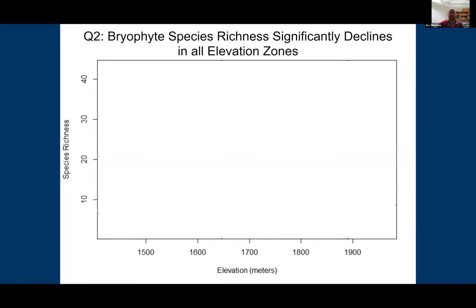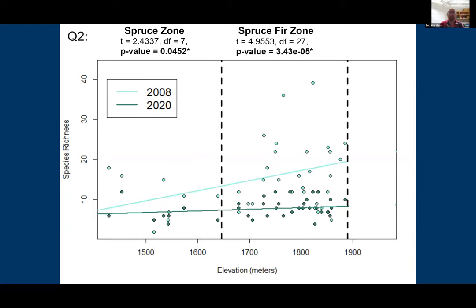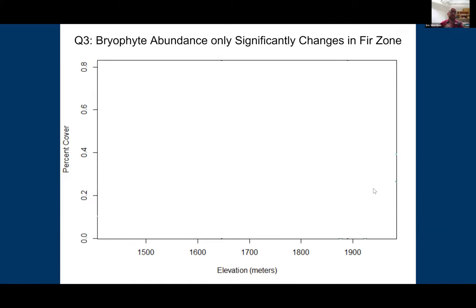With elevation on the x-axis and species richness on the y-axis, presented as a linear model to show the magnitude of changes between time points: in the spruce zone we see a significant decline in species richness; in the spruce-fir zone, again a significant decline; and in the fir zone, again a significant decline. As elevation increases, the difference between the two time points becomes more and more pronounced.